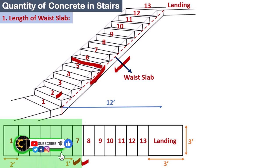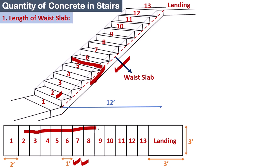The horizontal distance is equal to 12 feet. From the first step to the last, there are 12 steps, each with a tread of 1 foot, giving a horizontal distance of 12 feet. The vertical distance is 6 feet, since each riser is 6 inches and there are 12 steps total.